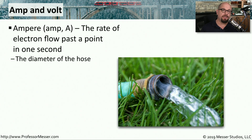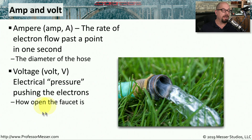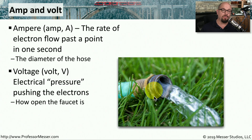In very broad terms, we can describe electricity flowing through a wire as water might be flowing through a hose. An ampere, or amp, abbreviated as a capital A, is the rate of electron flow past a point in one second — you can think of this as the diameter of the hose the water is flowing through. Voltage, abbreviated as volt or a capital V, is the pressure of the electrons being pushed through that wire. Compared to water flowing through a hose, the voltage would be how open that faucet is, allowing the water to flow through.